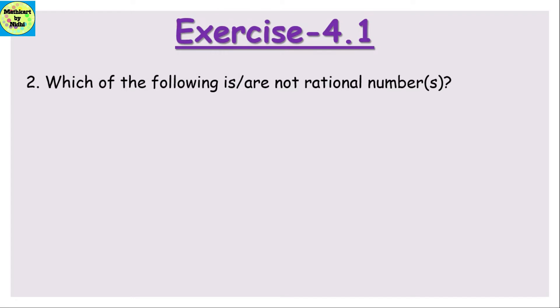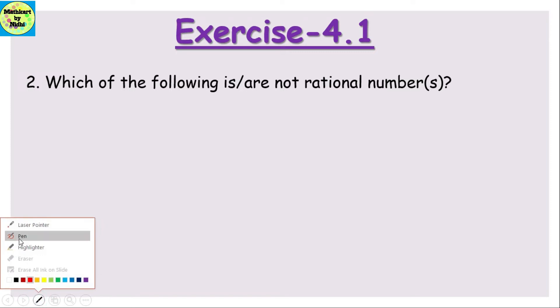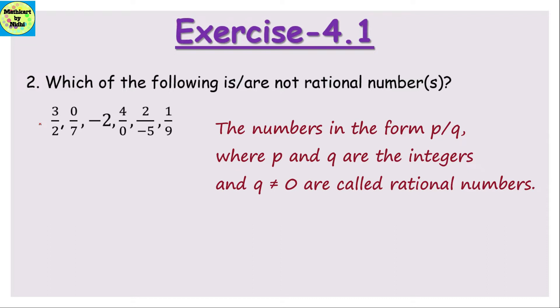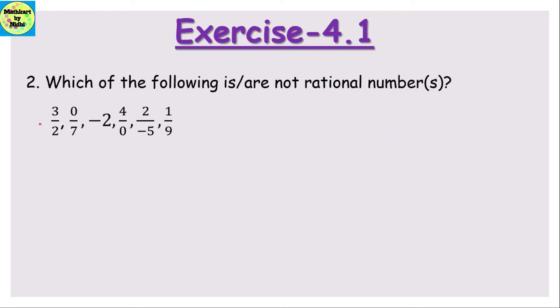Question number 2: which of the following are not rational numbers? As we already discussed some basic properties of rational numbers in the previous video, let's recall one more time. A rational number is any number in the p/q form where p and q are integers and q is not equal to 0. So 3/4 is in the p/q form and the denominator is not 0, so 3/4 is a rational number.